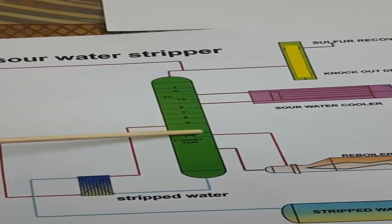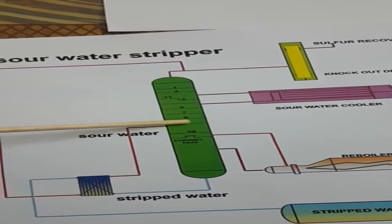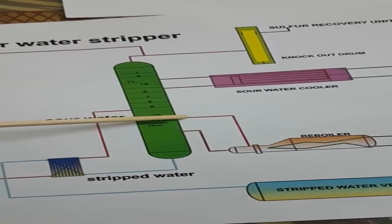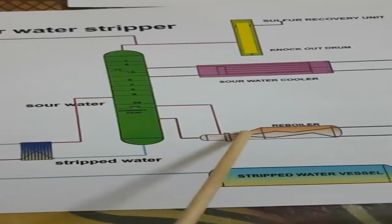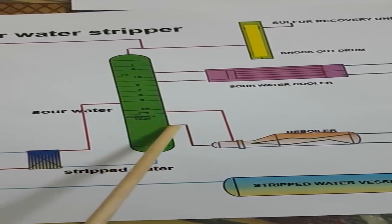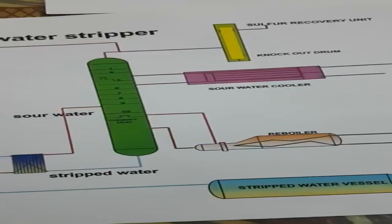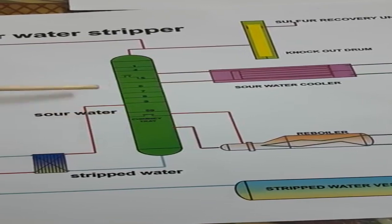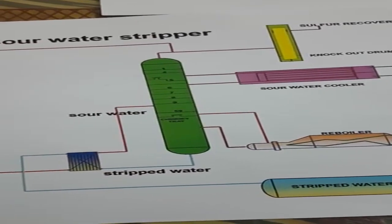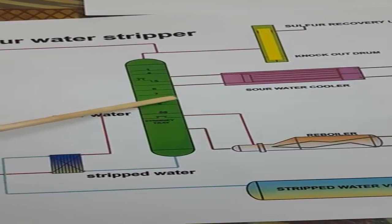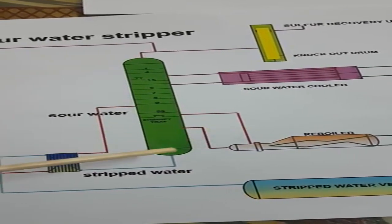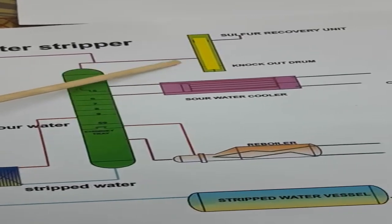Sour water comes down through the trays to the chimney or collection tray, then goes to the reboiler where it is reheated and returns to the column. The hydrogen sulfide liberated gets segregated and rises to the top section, while the strip water collects at the bottom. The hydrogen sulfide gas from the top goes to the sulfur recovery unit, and strip water is collected at the bottom.